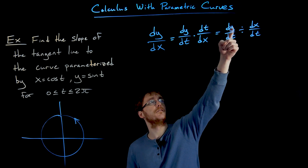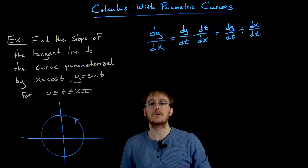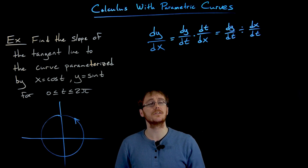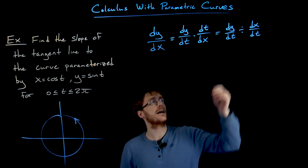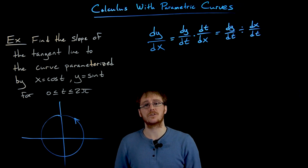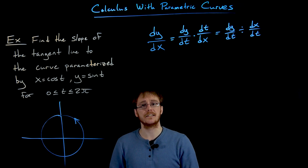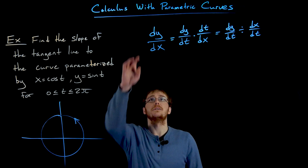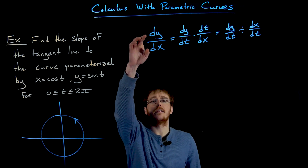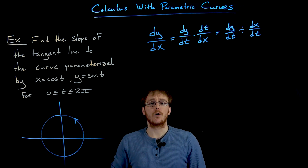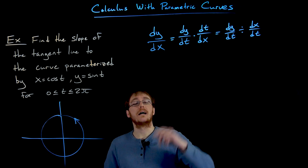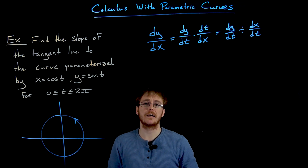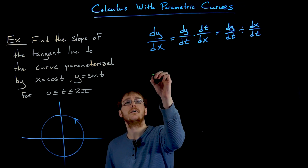We take the derivative of y with respect to t using our given parametric equations, divide that by the derivative of x with respect to t, and taking that quotient constructs the derivative dy/dx as we know it. So now we need to find these two pieces and put them together to find the slope of our tangent line.